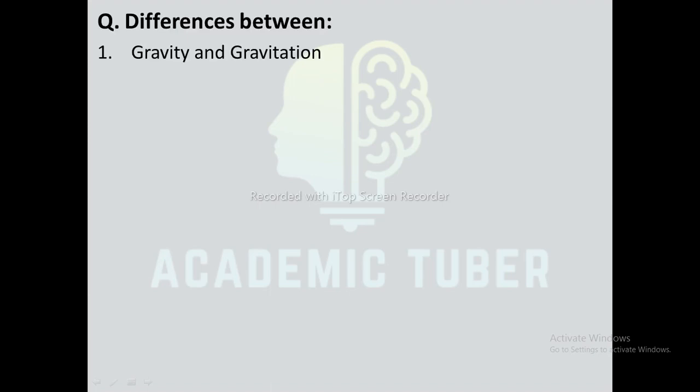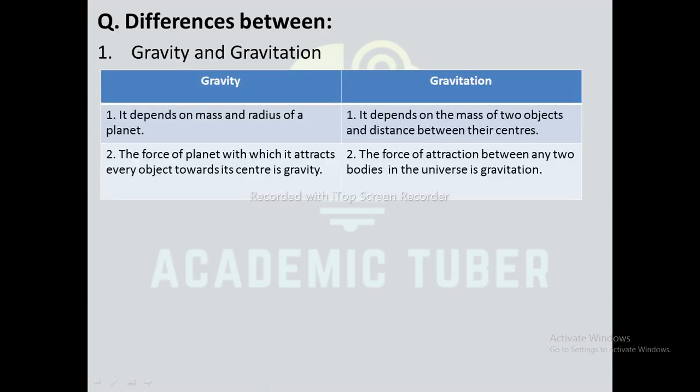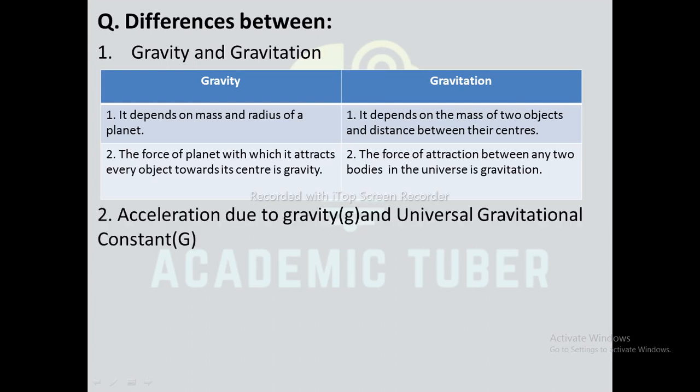Differences between gravity and gravitation: gravity depends on mass and radius of the planet, whereas gravitation depends on the mass of two bodies and the distance between their centers. Gravity is the force with which a planet attracts every object towards its center; gravitation is the force of attraction between any two bodies in the universe.